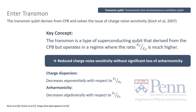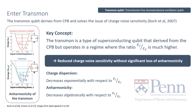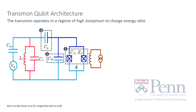We can bring down the charge dispersion quite significantly whilst preserving this anharmonicity property sufficiently enough to make sure that transitions between the lowest two energy states are still unique and not affecting transitions of higher energy level states. The transmon architecture consists of two Josephson junctions that are being shunted by some additional capacitance Cb. This shunt capacitance is then matched by gate capacitance Cg, as shown on the diagram. This is an example of a DC-SQUID architecture, allowing the Josephson energy Ej to be tuned by an external magnetic flux.